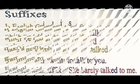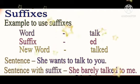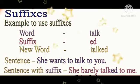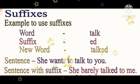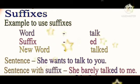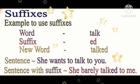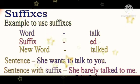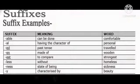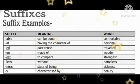Let us look at some examples. I have taken the word talk — T-A-L-K. If I add the suffix 'ed' (E-D) to it, I get the new word talked — T-A-L-K-E-D. So it will become a suffix word. In a sentence: 'She wants to talk to you.' After adding the suffix, the sentence becomes 'She barely talked to me.' Here we have added E-D to the word talk.